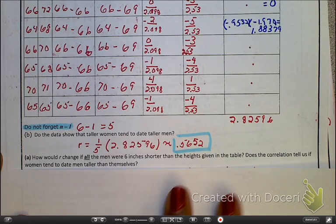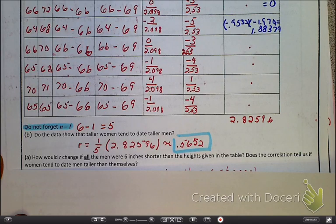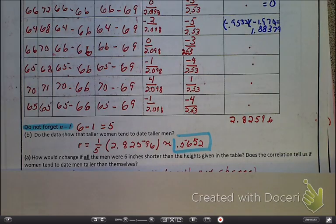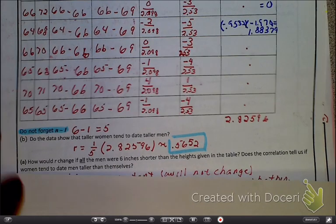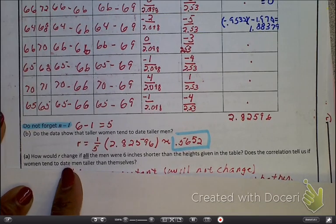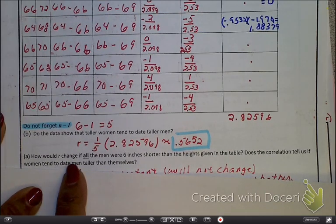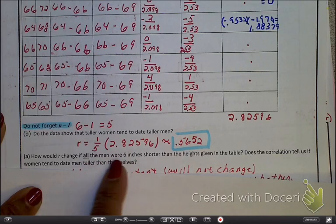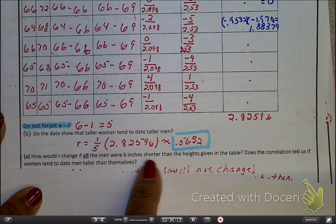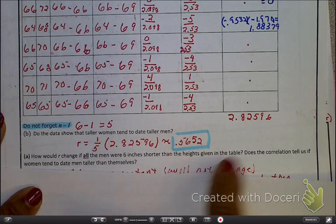So, let's continue and look at the rest of this. Now, this deals with that objective that what happens if with outliers and what happens if I change units when it comes to correlation. So, the question is, and this is very important, how would R change for these men if they were six inches shorter than the heights that are on the table?